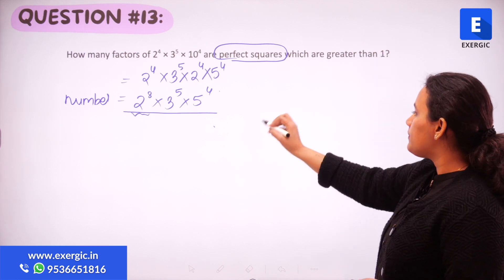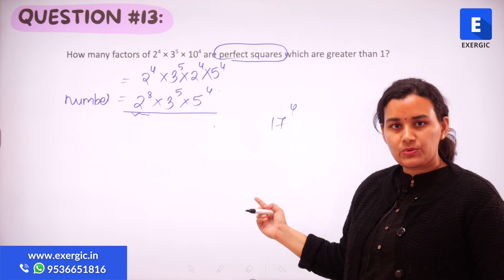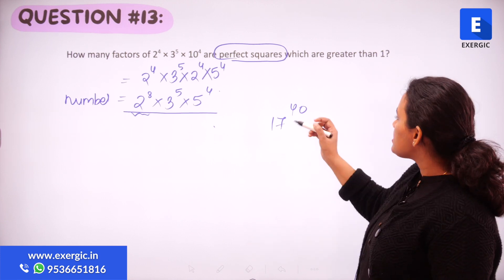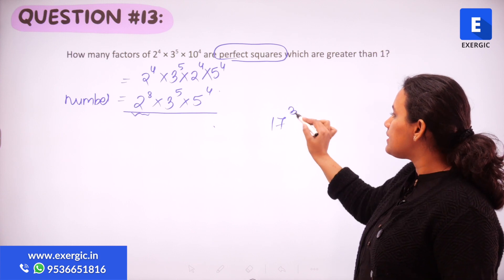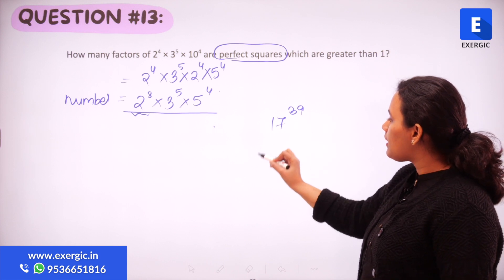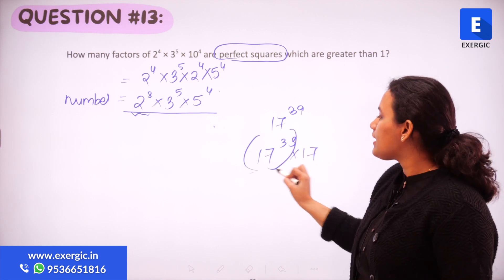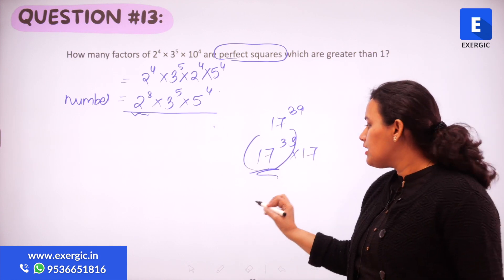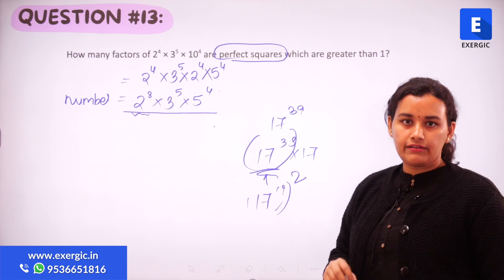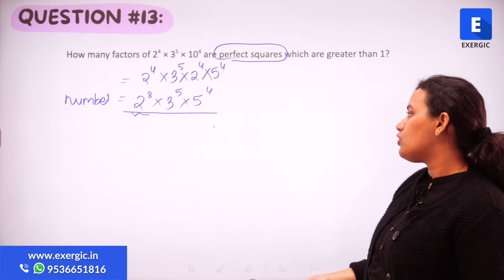Similarly, 17 raised to the power 4 is a perfect square, and 70 raised to the power 40 is also a perfect square. But 70 raised to the power 39 is not, because 17 raised to the power 39 can be written as 17 raised to the power 38 into 17, where only the first part is a perfect square. This is how we determine whether a number is a perfect square or not.